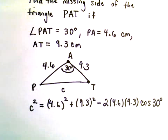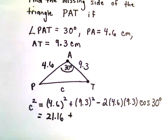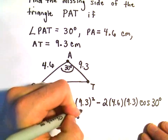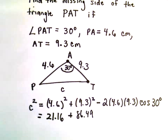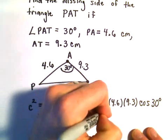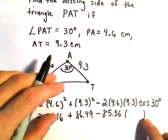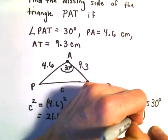Now there's not really too much left to do other than just do a bunch of arithmetic. Let's see if we can do all this. So we've got 4.6 squared, I'm getting that to be 21.16. 9.3 squared, I'm getting that to be 86.49. 2 times 4.6 times 9.3, that's going to be negative 85.56. We know cosine of 30 degrees is the square root of 3 over 2.